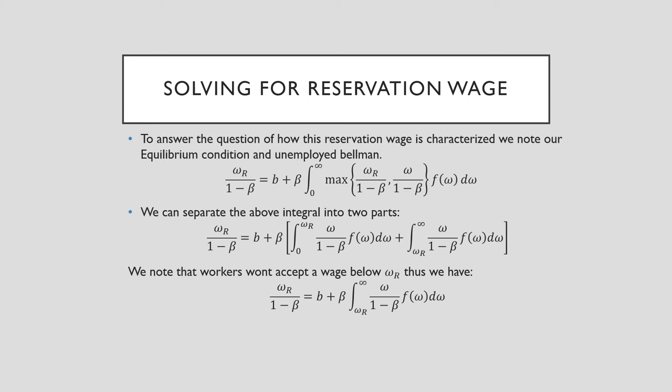We can separate the above integral into two parts: the integral from zero to our reservation wage and the integral from our reservation wage to infinity. We note that workers won't accept a wage below omega_R. So we simplify our condition, where we have omega_R/(1-beta) = b + beta times this integral of wages from our reservation wage to infinity.